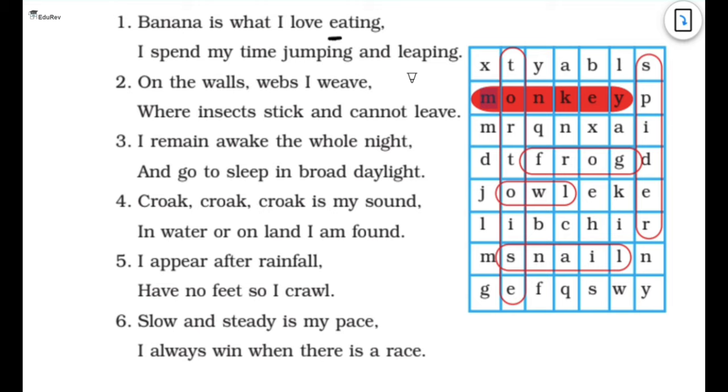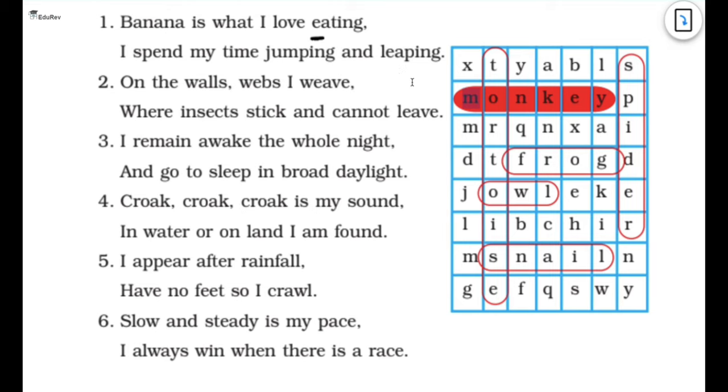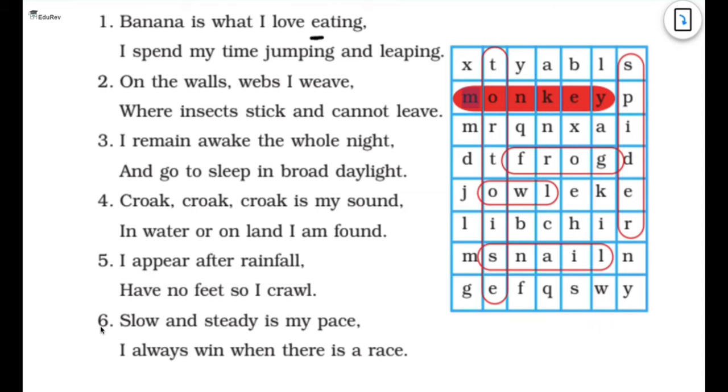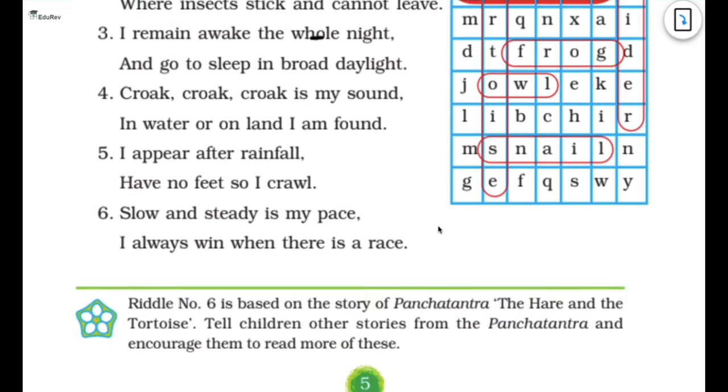Next is on the walls, webs I weave where insects stick and cannot leave. So we have spider. Then it's I remain awake the whole night and go to sleep in the broad daylight. So it's owl. Croak croak croak is my sound, in water or on land I am found. So it's frog. I appear after rainfall have to feed so I crawl. So it's snail. Slow and steady is my pace, I always win when there is a race. So we have a tortoise.